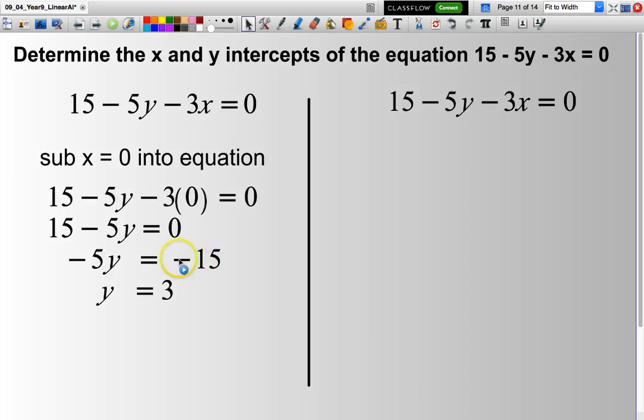Then what I need to do is divide both sides by -5. Give me the value y = 3. So there is one coordinate, (0, 3).